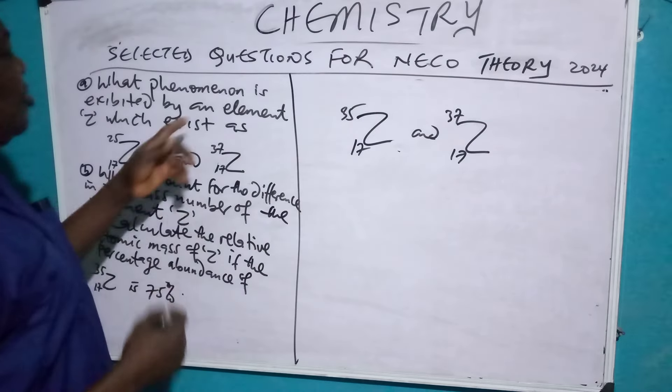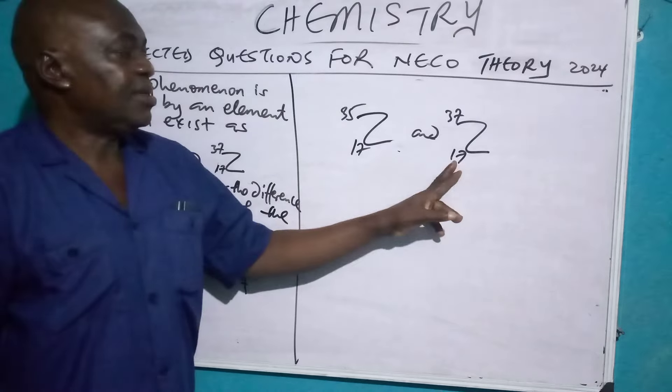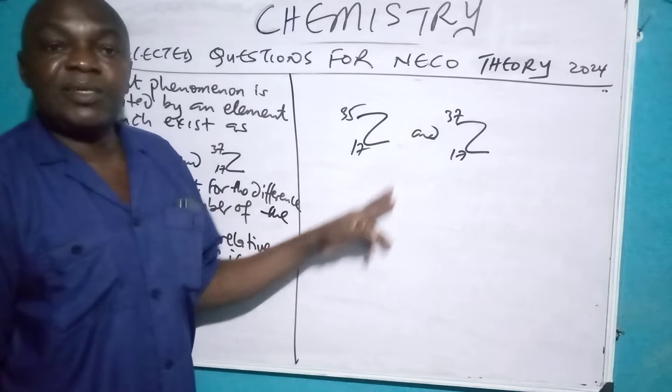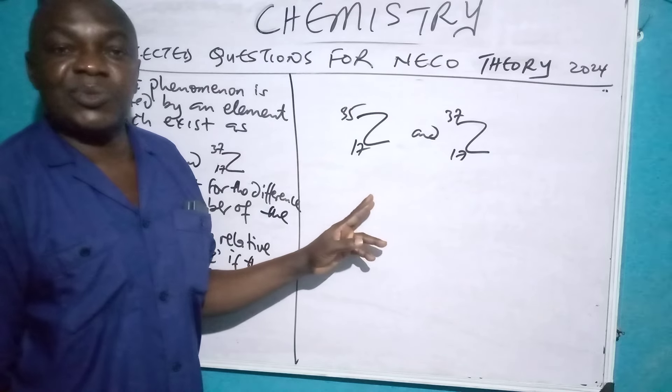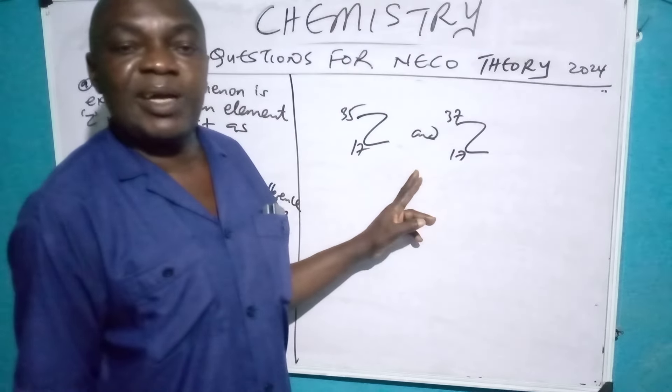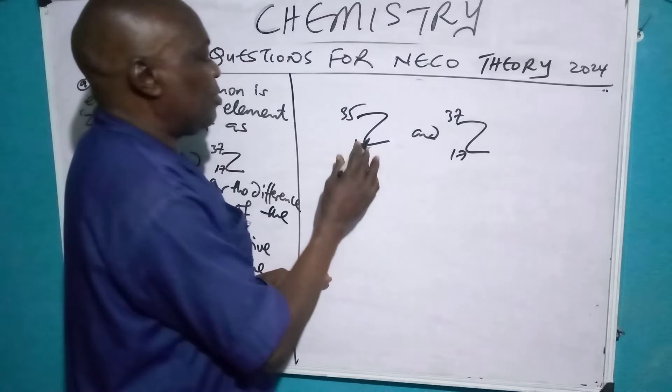The question is, what phenomenon is exhibited by this? By looking at it, in the introductory part of chemistry in essence 1, we are taught what is called isotope. Isotopes are atoms of the same elements with the same atomic number with different mass number. Remember this is the atomic number?